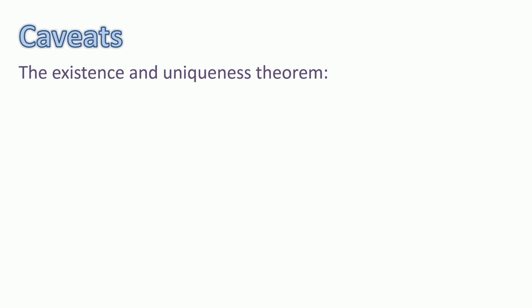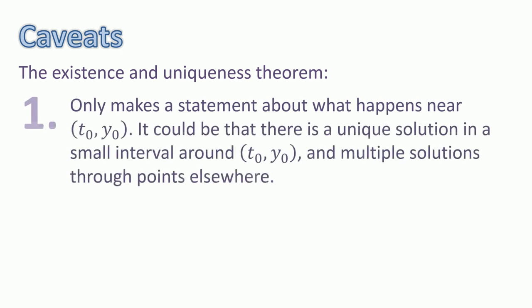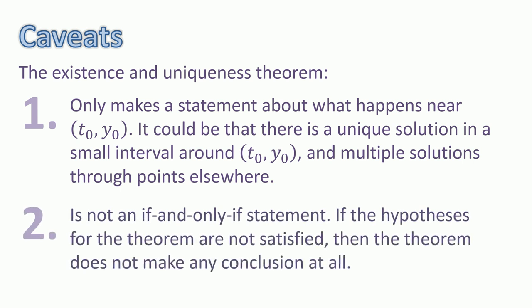When using the existence and uniqueness theorem, keep two caveats in mind. First, the theorem only makes a statement about what happens near (t0, y0), in some possibly small interval around this point — it doesn't say anything about what happens far from this point. It could be that there is a unique solution near (t0, y0) but multiple solutions elsewhere. Second, the theorem is not an if-and-only-if statement. If the hypotheses for the theorem are not satisfied, then the theorem does not make any conclusion at all.